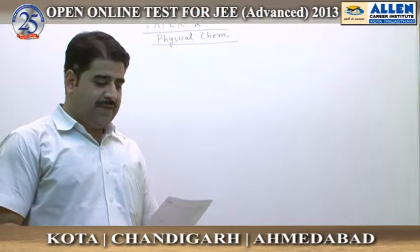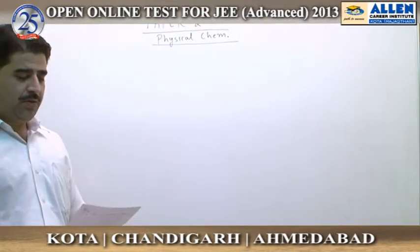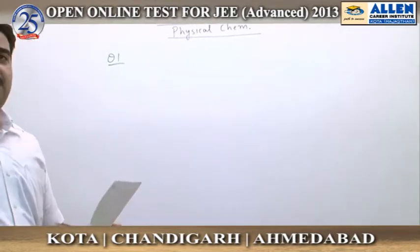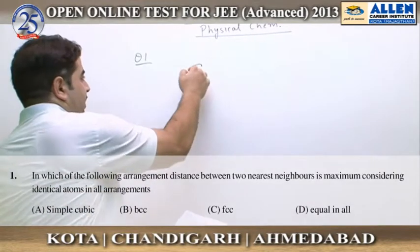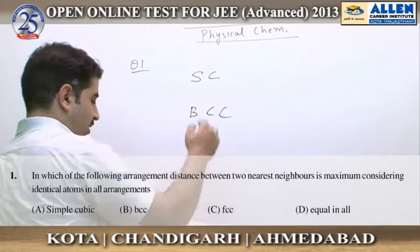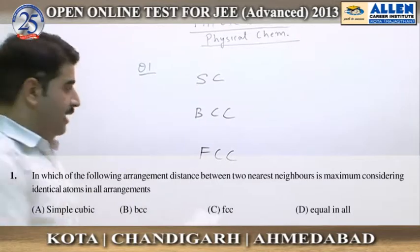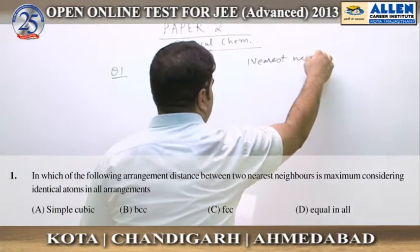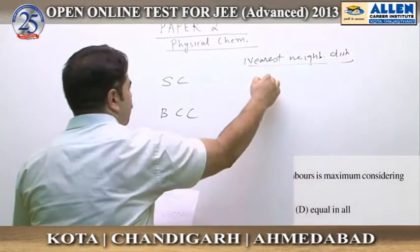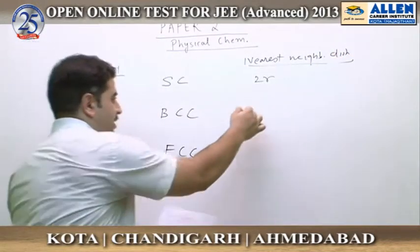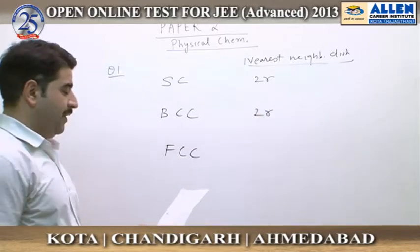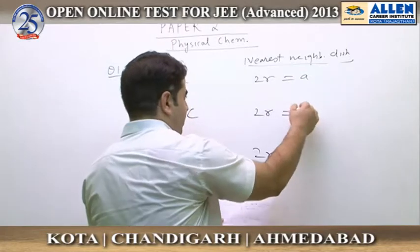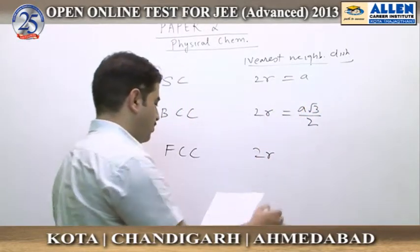We are going to discuss the physical chemistry part of paper two, already open test. In question number one, we have to compare the nearest neighbor distance in simple cubic, body-centered cubic, and face-centered cubic crystals. The closest nearest neighbor distance in simple cubic is equal to 2r, in BCC it is again 2r, and in FCC it is again 2r. In terms of a, these values are: SC gives a, BCC gives a√3/2, and FCC gives a√2/2.